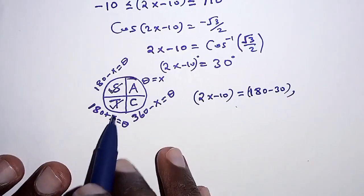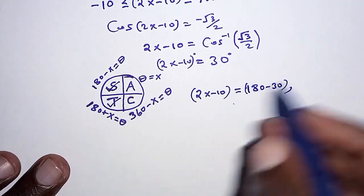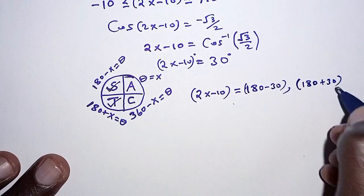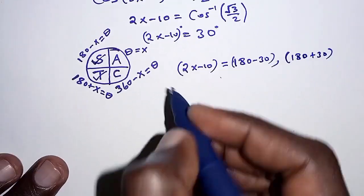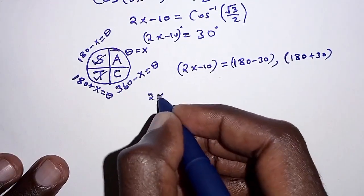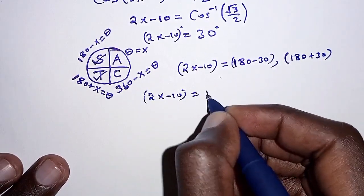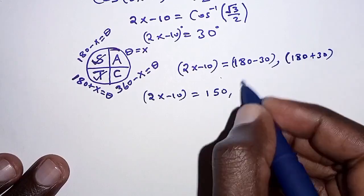The next one we obtain from the next quadrant, 180 plus acute angle, that is 180 plus 30. So we have 2x minus 10 equals to, so here we have 150, and this is 210.